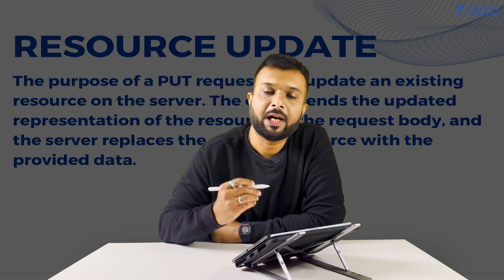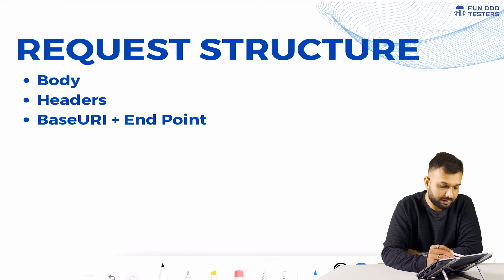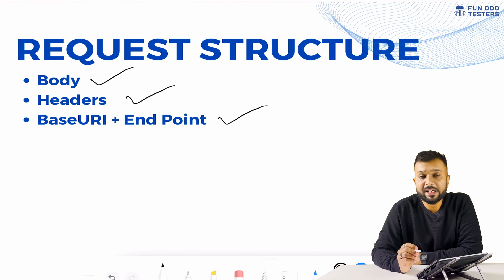First, we will understand the purpose of a PUT request. A PUT request is used when we have already created some resources and we want to update that same resource. For example, on Instagram, if we have uploaded a photo with a caption or location and we want to update the caption, internally it fires a PUT request. So the purpose of a PUT request is to update an existing entity.